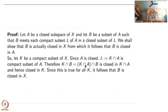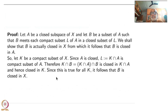So K∩A is L, and L∩B is closed — that is the property we started with: B meets every compact subset of A in a closed subset. So K∩A gives us L; L∩B is closed in L. Therefore K∩B is closed in K∩A, and therefore closed inside K itself because K∩A is closed inside K. So this is true for all K; it follows that B is closed in X because X is in CG.